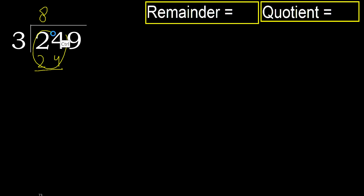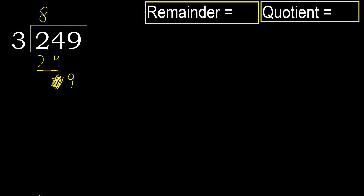Subtract 0. Next, 9. Eliminate 0 on this side. 9 — 3 multiplied by 3 is 9, which is not greater.